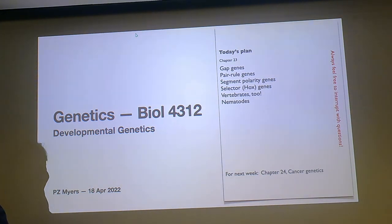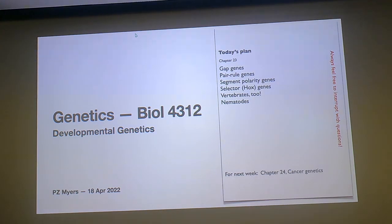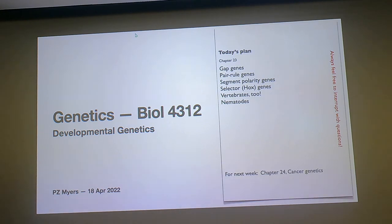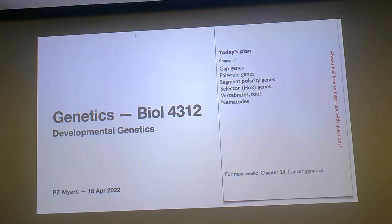A quick summary of last Wednesday's lecture: Nüsslein-Volhard and Eric Wieschaus did this saturation mutagenesis study where they isolated lots and lots of mutants—in particular, mutants that affected early development, including lethal mutations. The whole point was that they worked out the identities of many genes that contribute to early development in the fly, asking fundamental questions like how does the embryo know which end to make the head, which is dorsal, which is ventral, and how does the embryo know to make stripes and segments?